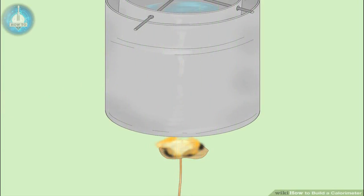Let the food burn. Keep the cans over the food for as long as it takes to burn completely. As the food burns, it will heat the water in the small can that is suspending in the large can. Carefully watch the food as it burns. If it goes out quickly, before the food burns completely, relight it.